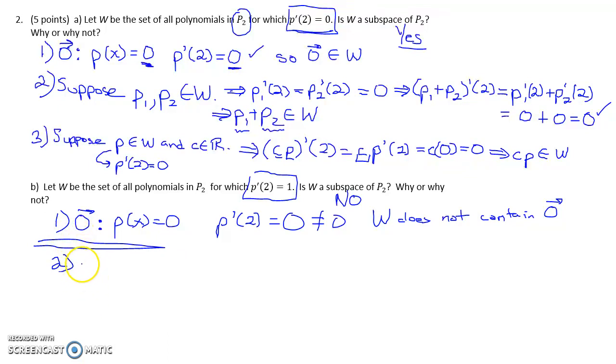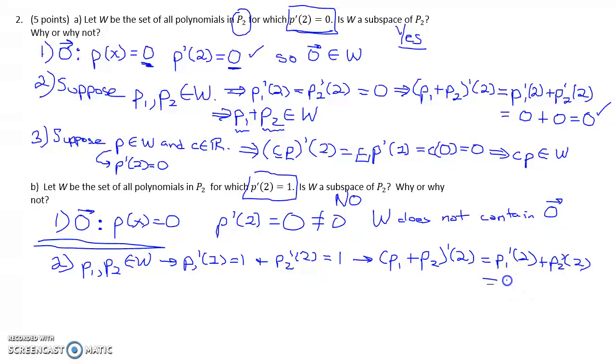But just to show you, also, if we say that P1 and P2 are elements of W, which in this case, in part B, means that P1 prime at 2 is 1, and P2 prime at 2 is 1. Well, then if we take the sum, P1 plus P2, take the derivative at 2, that's going to be P1 prime at 2 plus P2 prime at 2, which now that's 1 plus 1, which is 2, not 1. So P1 plus P2 does not belong in W. So it's not closed under addition.